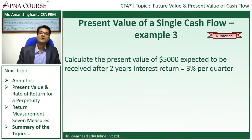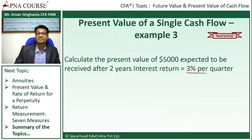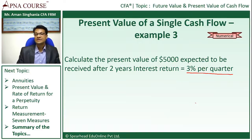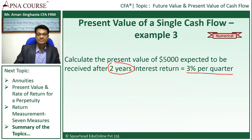Calculate the present value of $5,000 expected to be received after 2 years if the interest rate is 3% per quarter. Notice that the interest rate is given as 3% per quarter and not per annum. Now, 2 years is equivalent to 8 quarters.